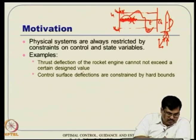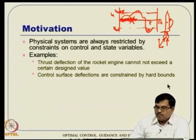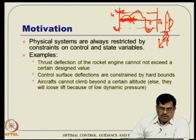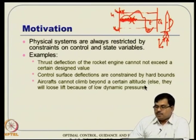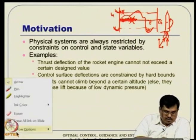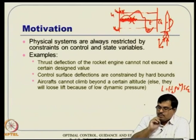Control surface deflections are also constrained by hard bounds. Coming to state constraints: aircrafts cannot climb beyond a certain altitude, because if they keep climbing, they will ultimately lose lift due to low dynamic pressure. Lift and drag are typically strong functions of dynamic pressure: L equals one-half rho V-squared times S times C_L. Rho is not a constant — it is a strong function of height, something like rho equals rho_0 times exponential of minus beta times h.